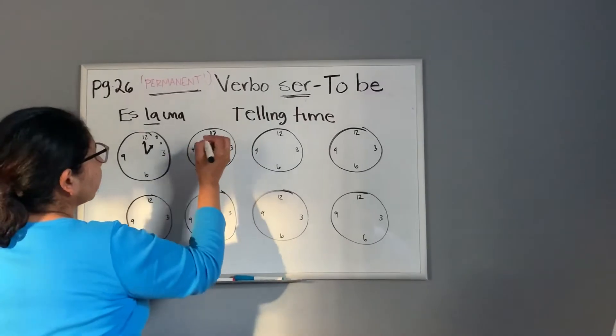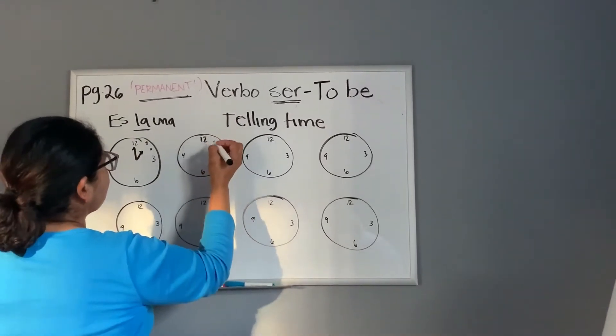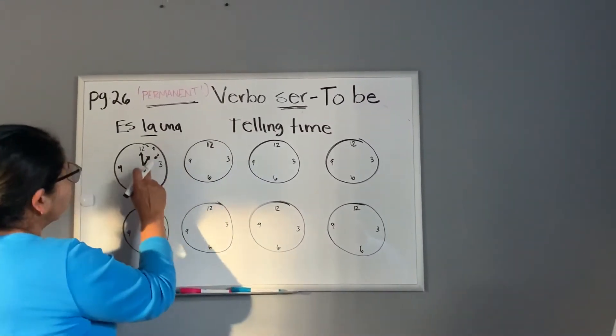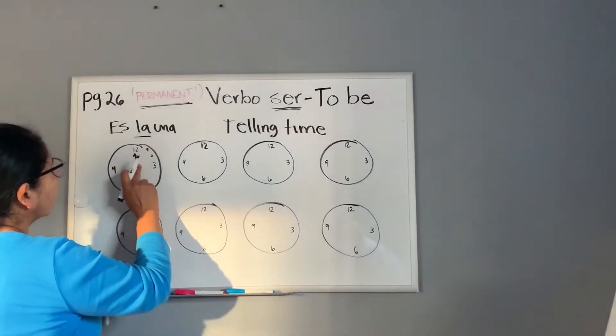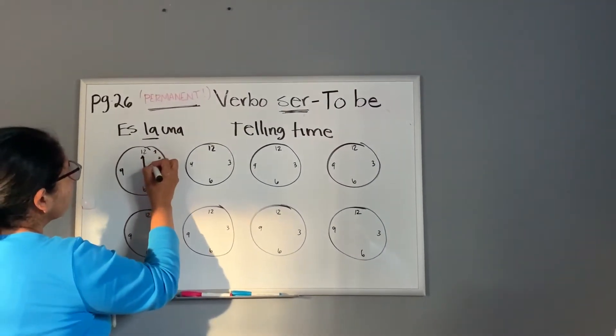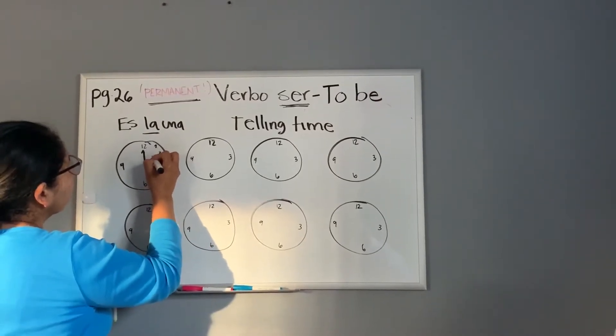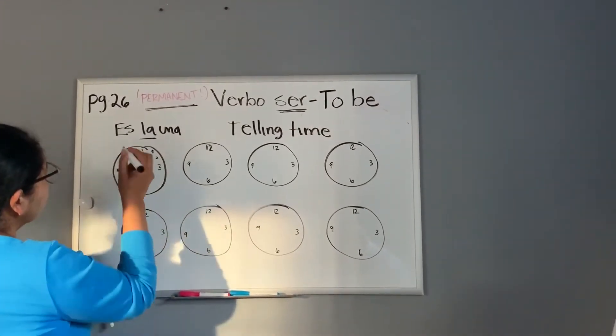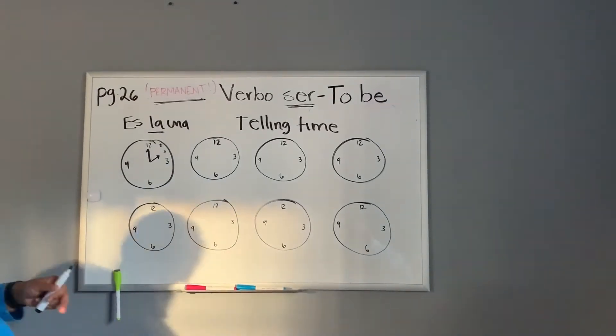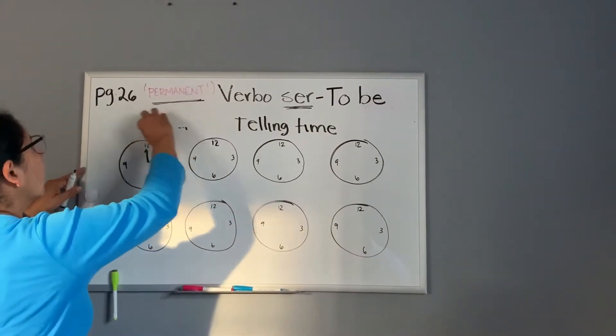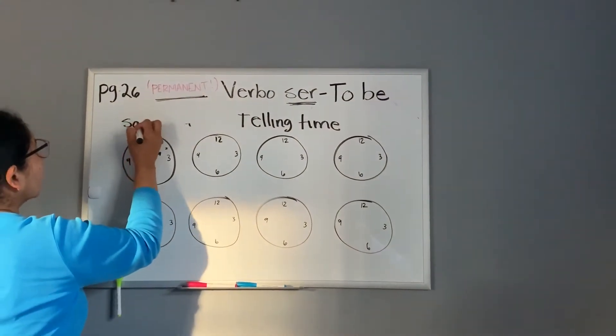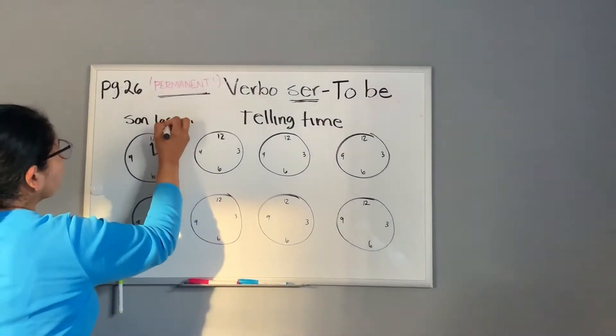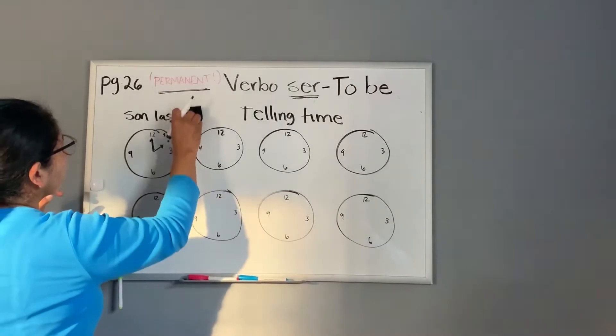And then let's do two o'clock. We can continue right here. Two o'clock. Let me raise this little hand and then I'm going to point to two o'clock. Right here. So, son las dos. Las dos.